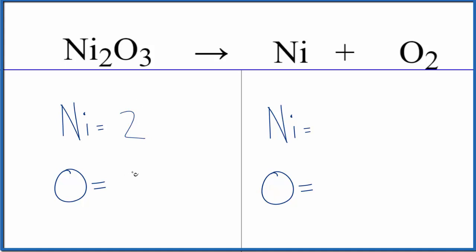We have two nickel atoms, three oxygen atoms. In the products, we have one nickel and two oxygen atoms.